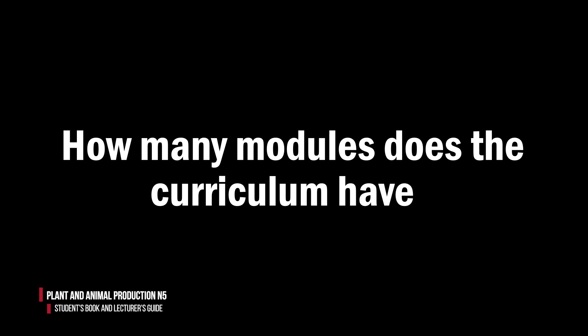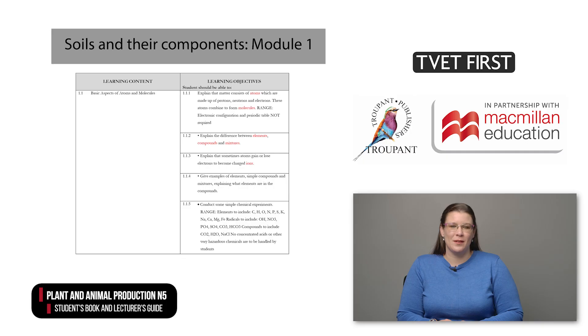Later in this video, I will demonstrate how the TVET First books will help you implement the new curriculum with ease. But now let's focus on the curriculum itself. There are three modules in the Plant and Animal Production Syllabus, and they have equal weighting. Module 1 deals with soils and their components and has eight learning objectives.